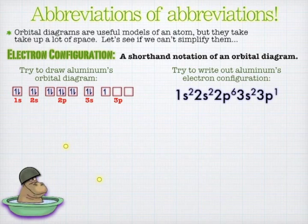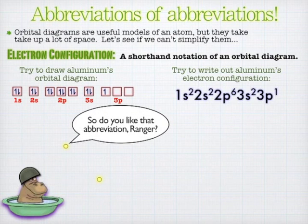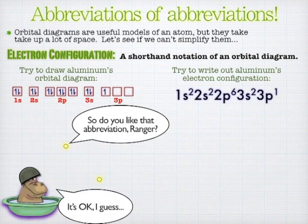You can just leave it in the order that it comes out. I know some periodic tables rearrange that based on the energy level, but I don't really see the point of that — you might as well keep it in the order that it fills in. So there you go. That's the electron configuration — just a hop, skip, and a jump from orbital diagrams.